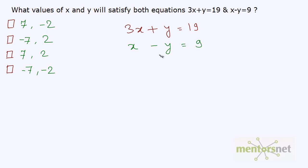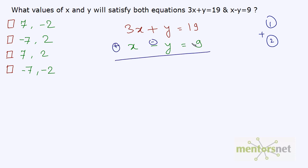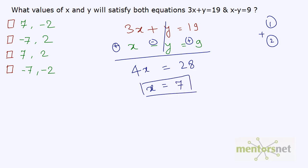Now you can cancel out y if you add equations 1 and 2. Adding equation 1 plus equation 2: 3x plus x gives you 4x, y minus y gets cancelled out, equal to 19 plus 9 gives you 28. Therefore, x is equal to 28 divided by 4, which gives you 7.